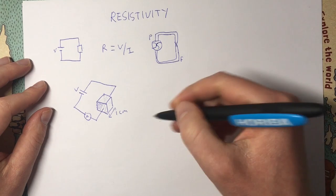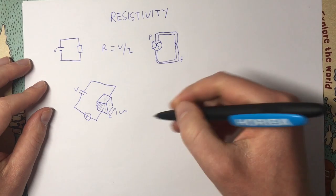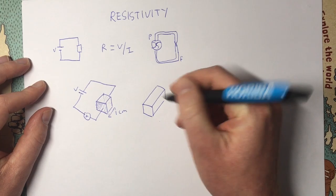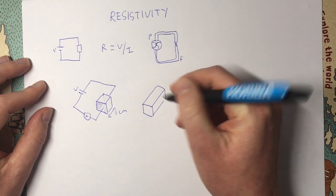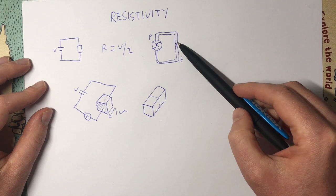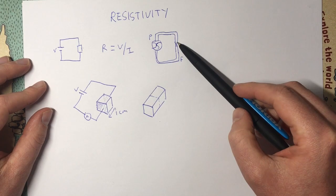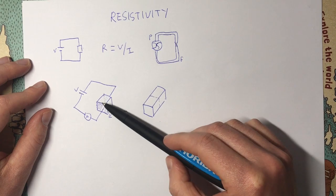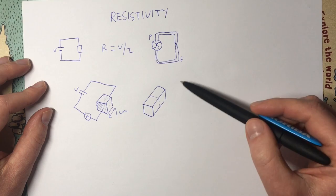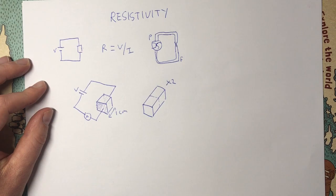Now let's imagine making the cube longer. If we take our cube and make it twice as long using the same material, how does that affect the resistance? Coming back to our water analogy, this is a restriction in the flow of current and we've just made that restriction twice as long — there's now twice as much stuff restricting the current. So by doubling the length, we double the resistance.